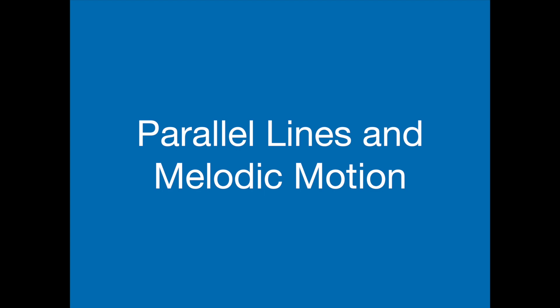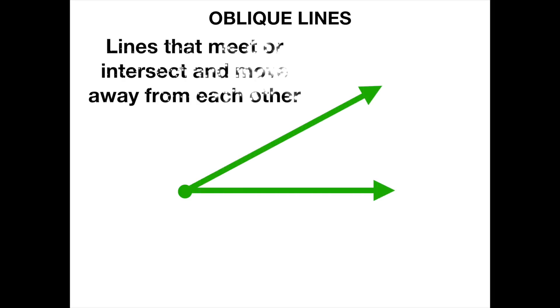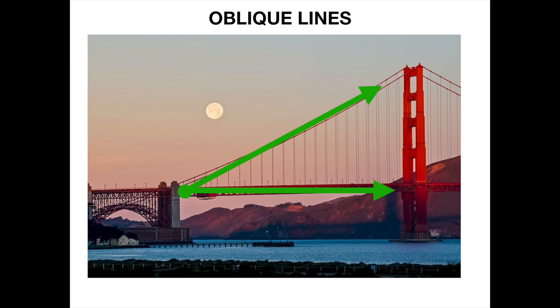Our next type of lines are oblique. They start at the same point and then gradually move farther and farther apart from each other. We can see oblique lines in the Golden Gate Bridge in San Francisco. See how the oblique lines are moving away from each other?